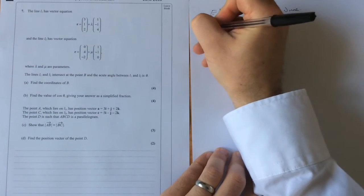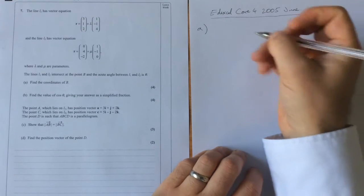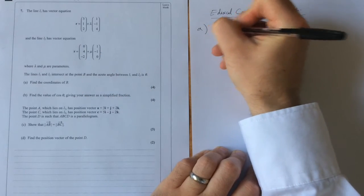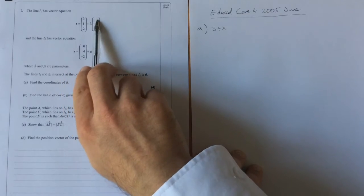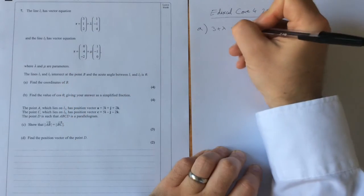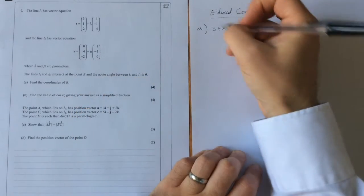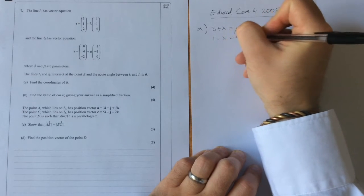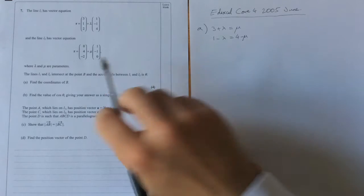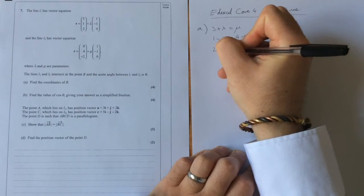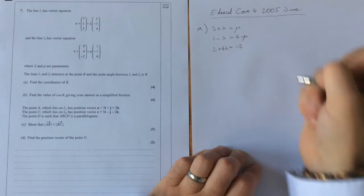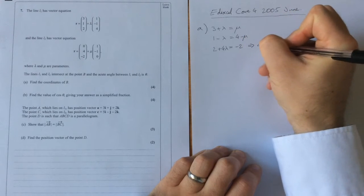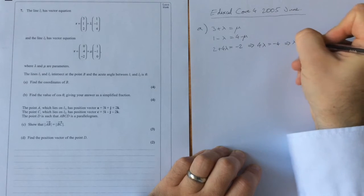Quite simple really. What we've got to do is we are going to take these two equations and solve them simultaneously. So if we look at the i components, we have 3 plus lambda for this first part must be equal to mu on the second line. We will also have 1 minus lambda on the top and 4 minus mu for the j's. And looking at the k's, we're going to have 2 plus 4 lambda is equal to minus 2. Now this bottom one only has one variable in it, so that is going to tell us that 4 lambda is equal to minus 4, which gives us lambda is minus 1.